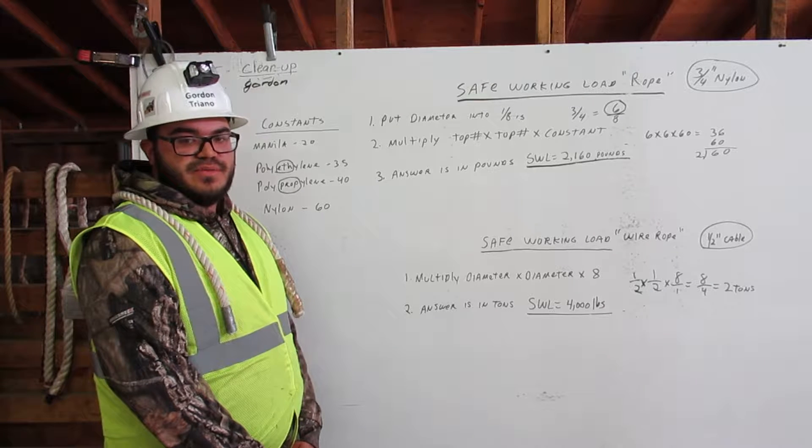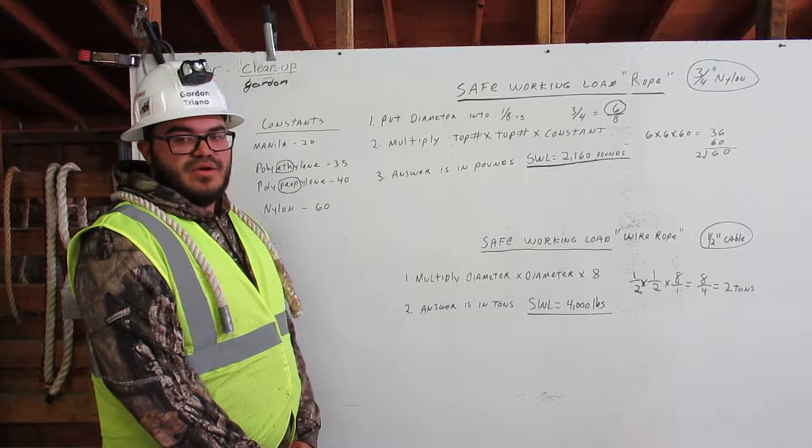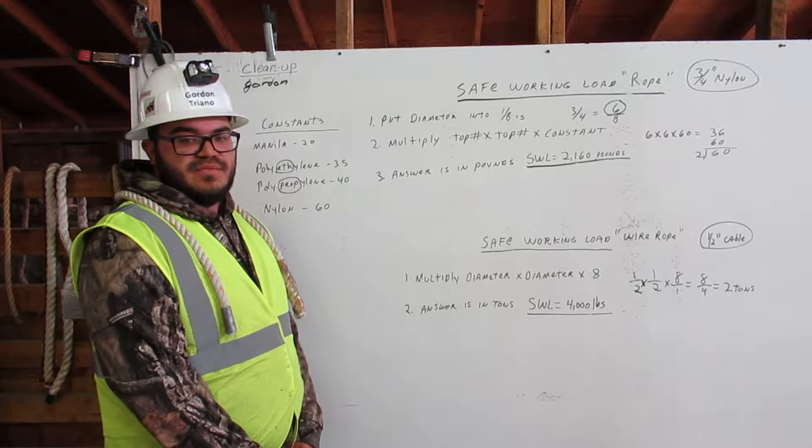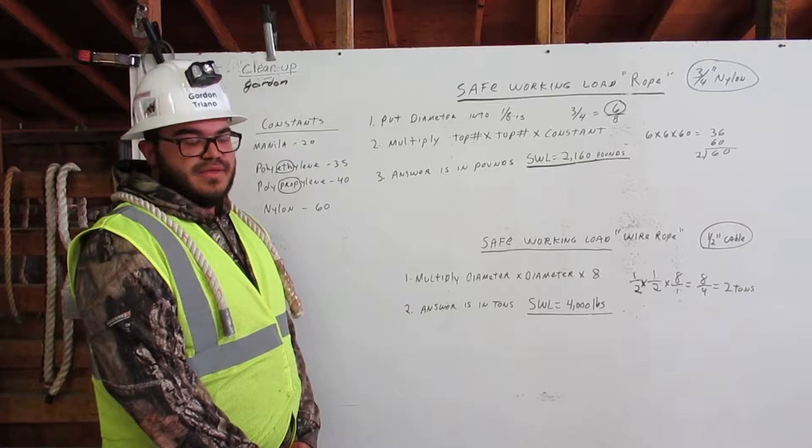I am going to explain how to calculate the safe working load for rope and wire rope rigging. This safe working load is a number that represents one fifth of the rigging capacity. Let me explain.